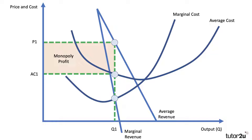The key takeaway here is that when demand is inelastic — when the coefficient of price elasticity of demand is less than one — this allows the firm to charge quite a high profit maximizing price and make a substantial margin on each unit sold. There is still plenty of consumer surplus left to extract, and through price discrimination you might target different groups of consumers willing to pay even more than P1. This is a good diagram to draw when showing a monopoly making high profits, especially when demand is price inelastic. The key is that price is well above average cost and well above marginal cost, leading to a loss of allocative efficiency.